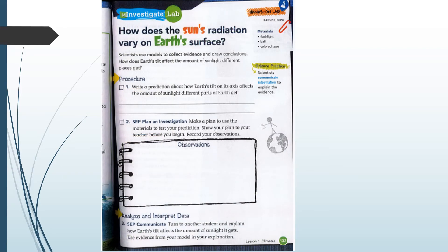Here on page 133 you have another optional lab called Investigate Lab: how does the sun's radiation vary on Earth's surface? If you have a flashlight, a ball, and colored tape at home, this is an experiment you are more than welcome to try.